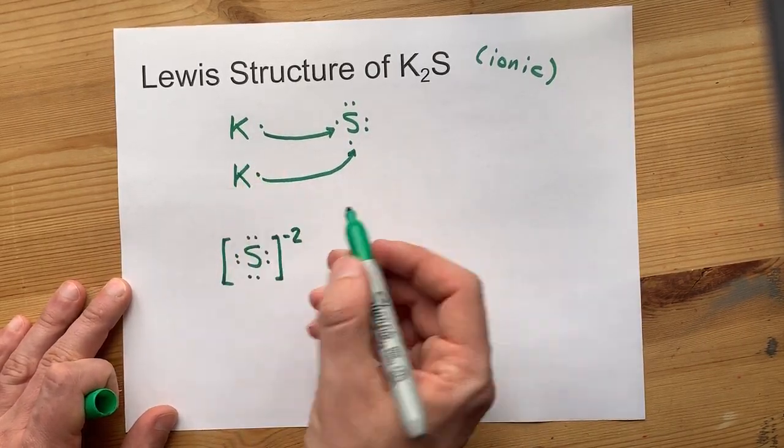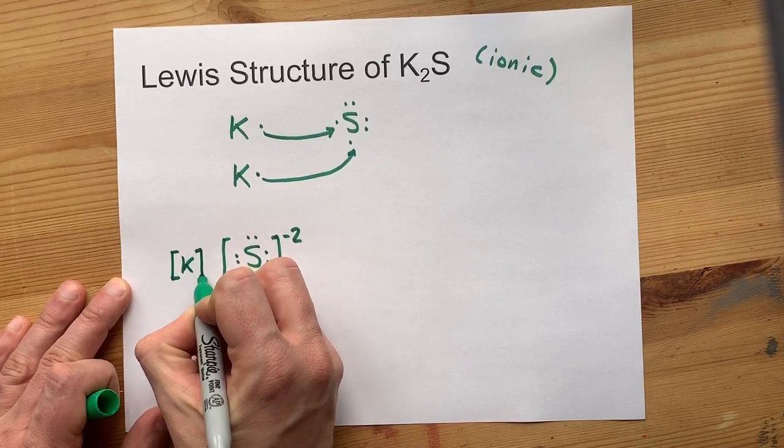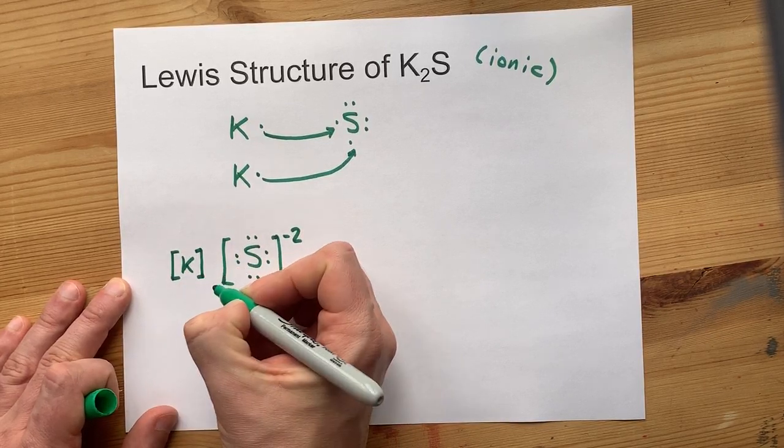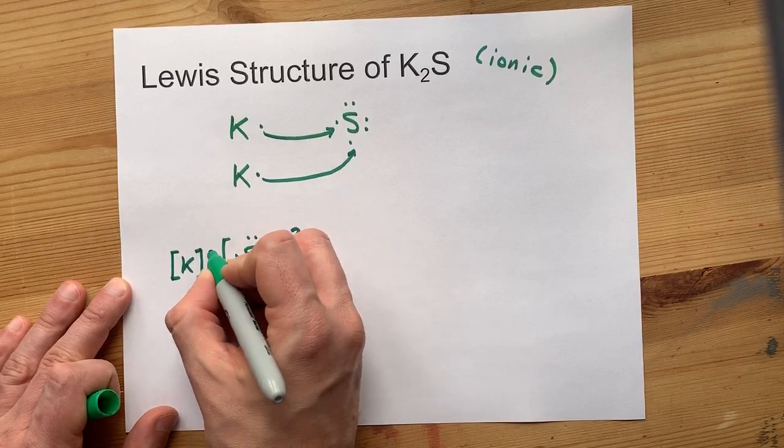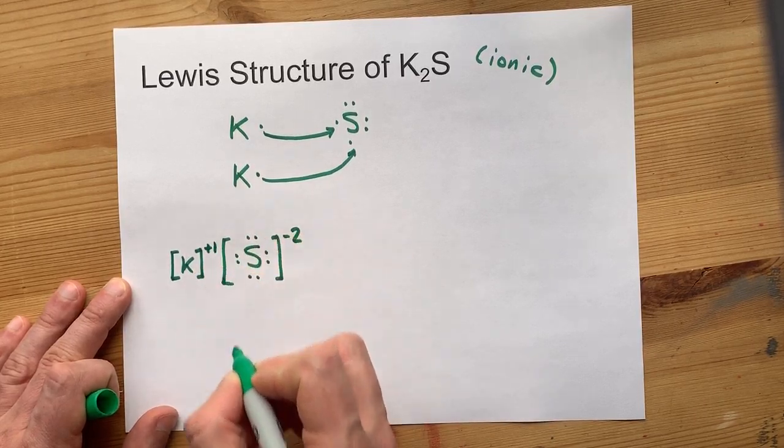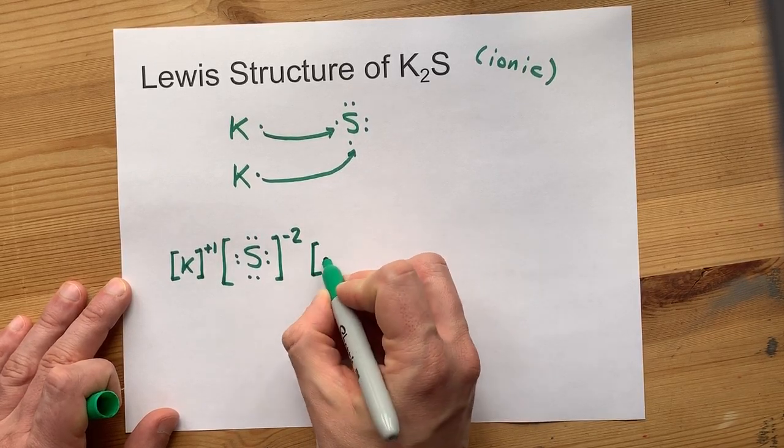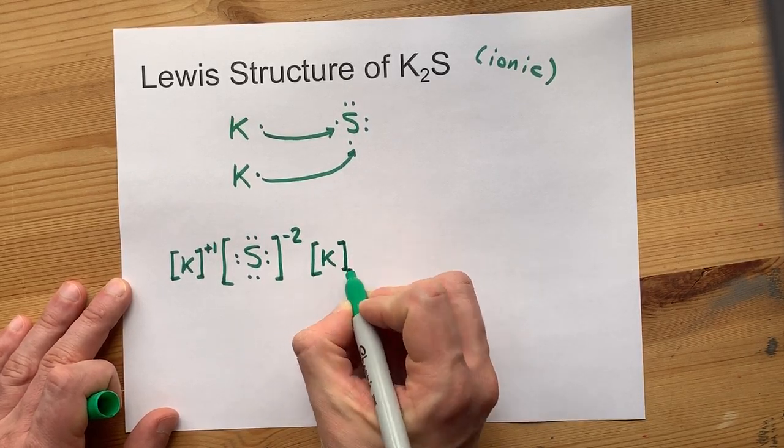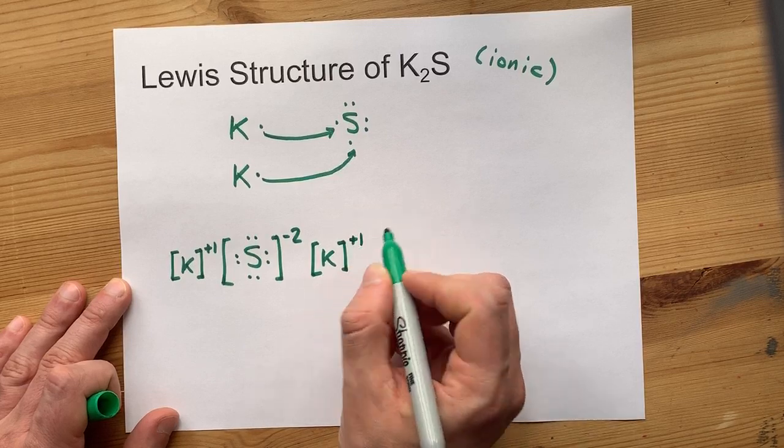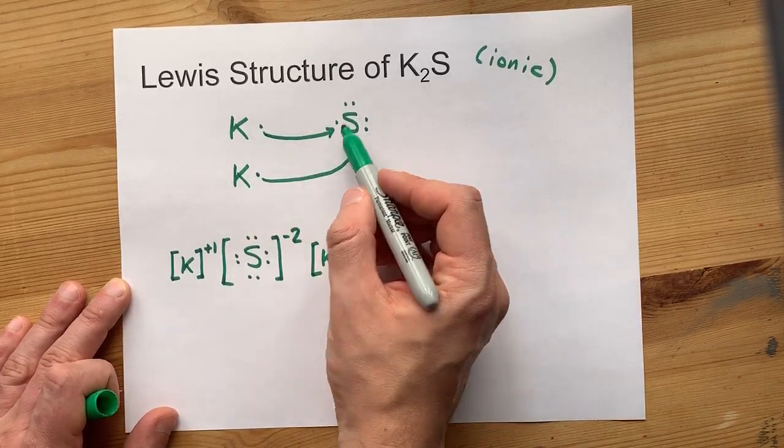We have two Ks as well, but they gave up their electrons. So don't put the dot there and show people that it gave up an electron by giving it a plus one charge.